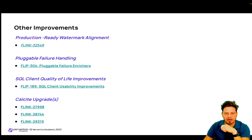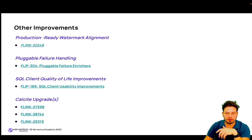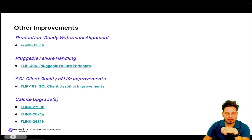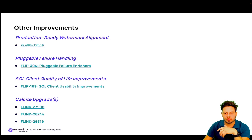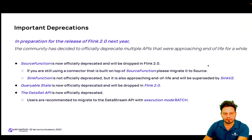In Flink 1.18, Apache Calcite was gradually updated from version 1.29 to 1.32. The immediate benefits of these upgrades are bug fixes, a smarter optimizer, and performance improvements. Additionally, this upgrade has unblocked the support for session windows by table value functions, so session windows supported by table value functions should be expected soon.